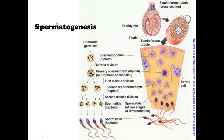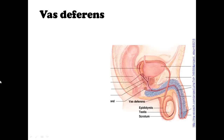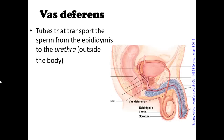Here's a closer image of spermatogenesis. This process occurs in the epididymis and the testes. You can see the cells dividing here, and the result is sperm. The vas deferens is the tube that transports sperm from the epididymis to the urethra, or to the outside of the body.